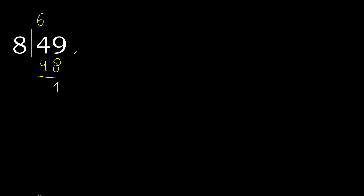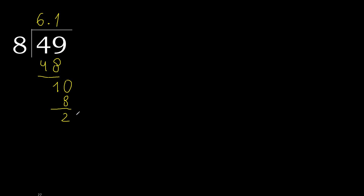Next: there is no next number, therefore complete — always complete with 0. Complete point. Bring down 10. 8 multiplied by 2 is greater. 8 multiplied by 1 is 8, which is not greater. Subtract to get remainder 2.